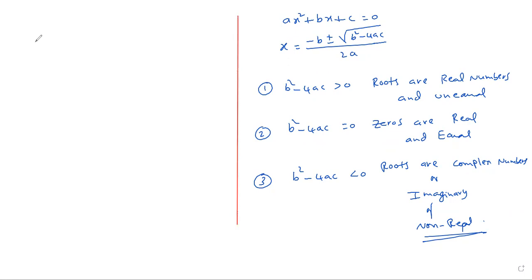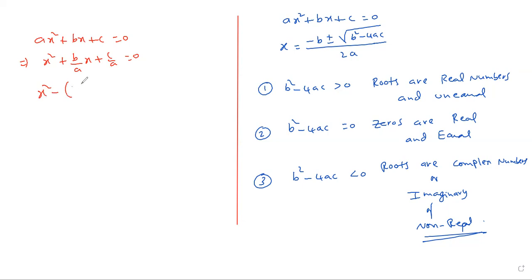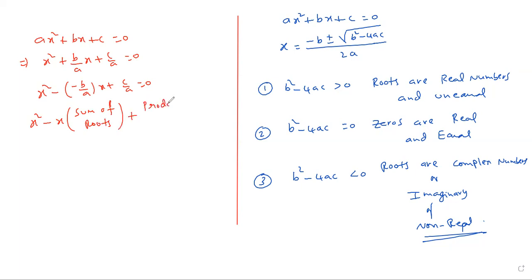Now, what is the nature of a quadratic expression or equation? For Ax² + Bx + C = 0, if you divide both sides by A, you get x² + (B/A)x + C/A = 0. Rewriting this as x² − (−B/A)x + C/A = 0, you can see that −B/A gives the sum of roots and C/A gives the product of roots.